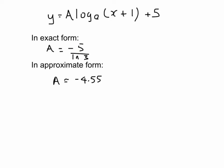So from before, we had the equation y equals a log to the base e of x plus 1 plus 5. And so you can write that in two forms if you use a as the exact form or the approximate version. So here they both are, you can have y equals negative 5 over natural log or log to the base e really of 3 times log to the base e of x plus 1 plus 5.